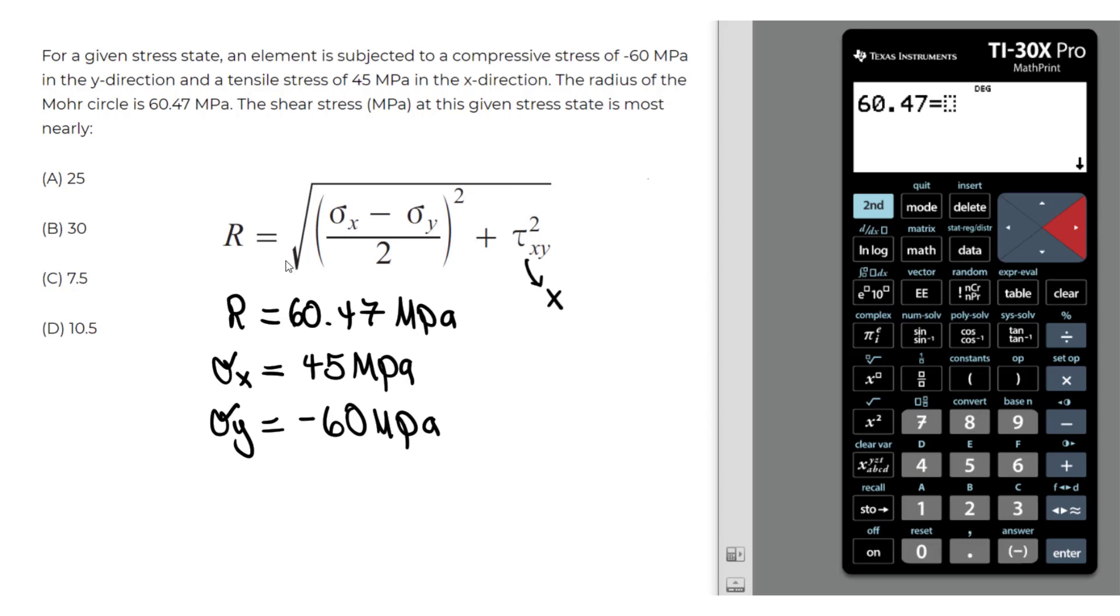So now we have the square root. Let's plug it in as we see it, the square root. And we have a parenthesis on the outside and we will use this fraction. The top, we will separate the top and the bottom. Make sure you use this, it's handy and it will save you a lot of time. So we will plug in sigma x, which is 45, minus sigma y. Sigma y is going to be negative 60.